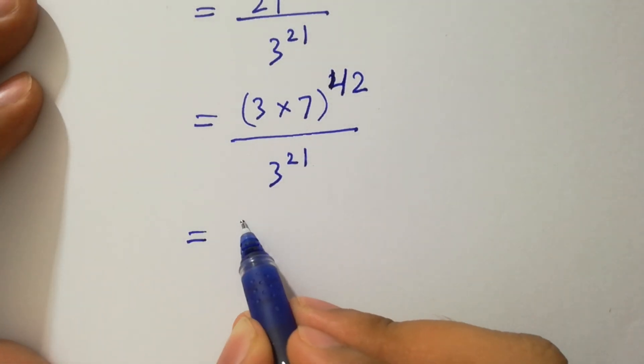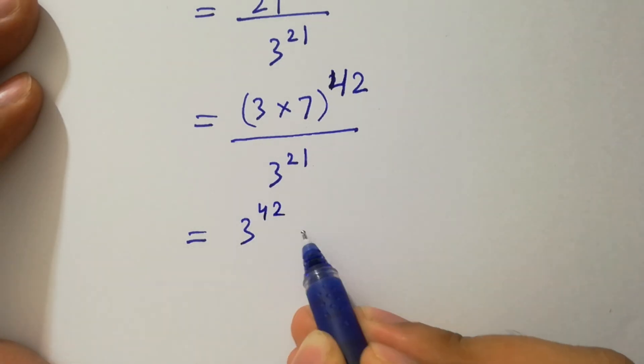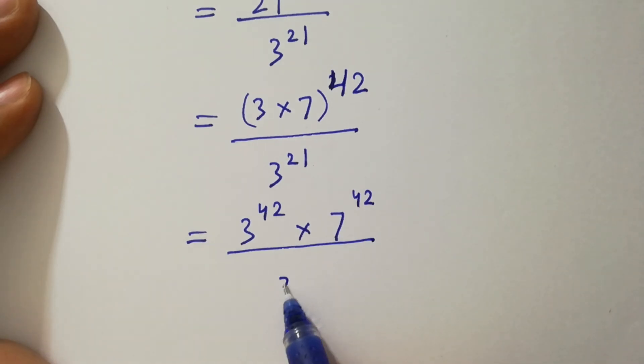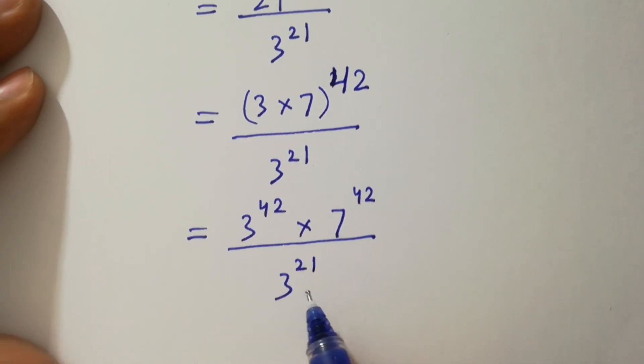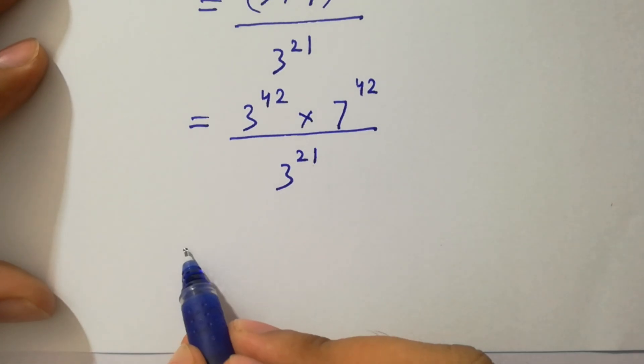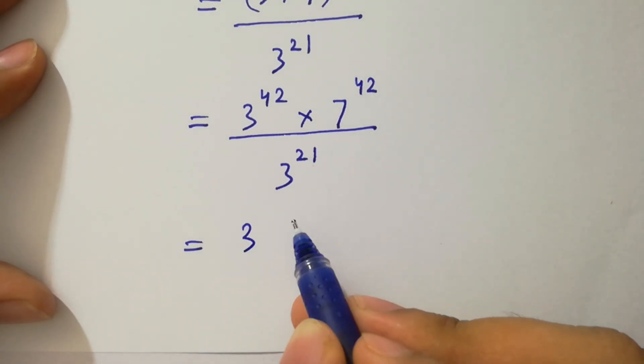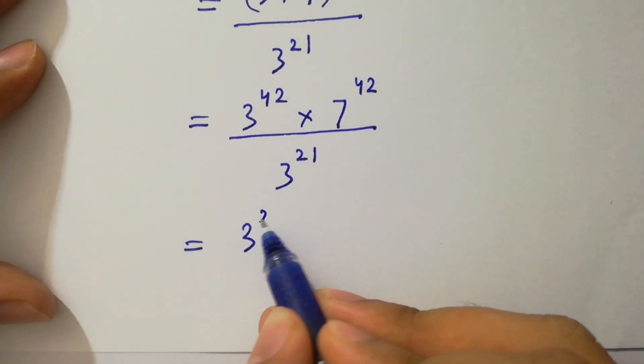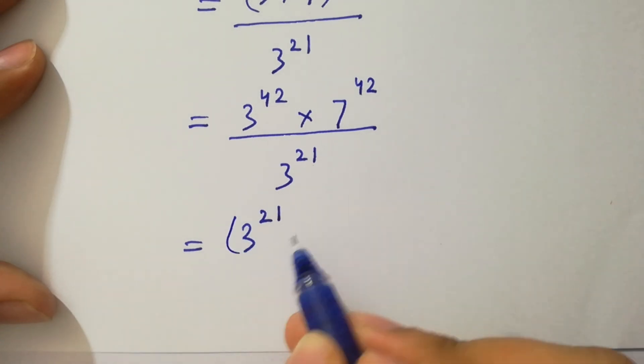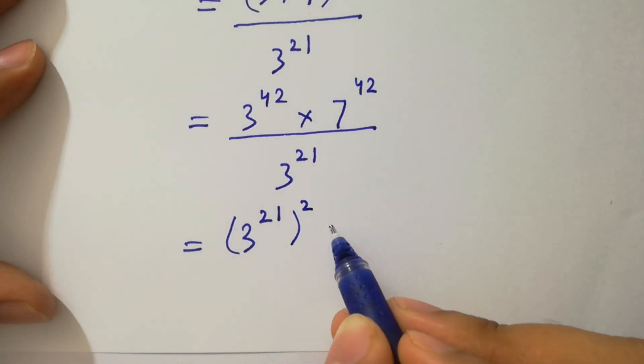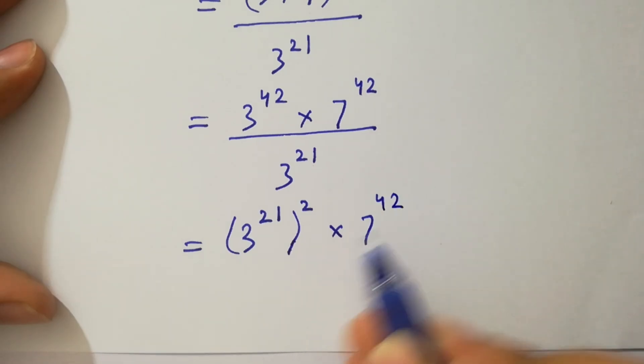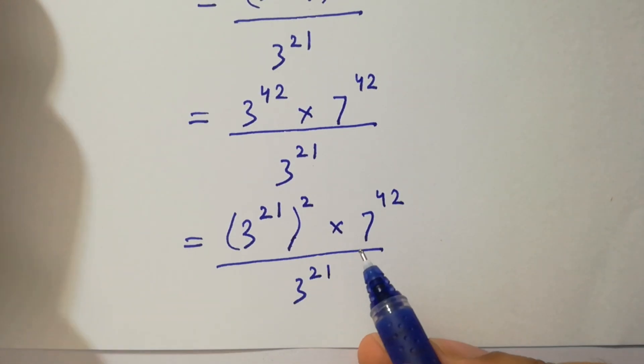So it will be 3 to the power 42 times 7 to the power 42 over 3 to the power 21. As 21 times 2 is 42, so here 7 to the power 42 and 3 to the power 21 is as it is.